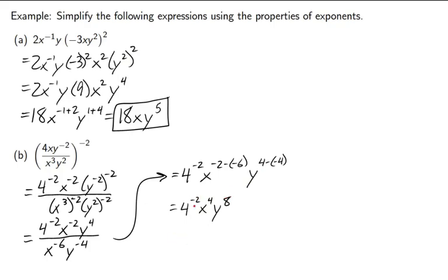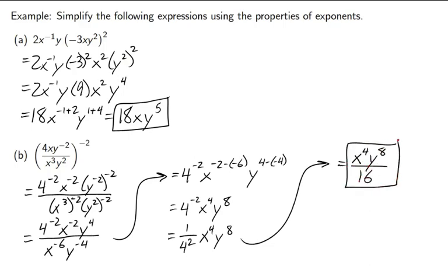Now, I'll take care of this negative 2 power. This is 1 over 4 squared, x to the 4th, y to the 8th. Or, if you'd like, we can just say this is x to the 4th y to the 8th over 16. Some of these take a little bit of time. This one had a lot of steps.